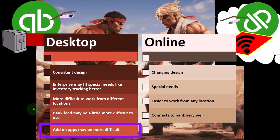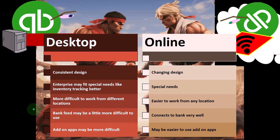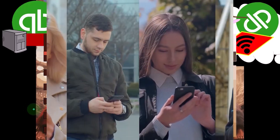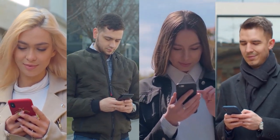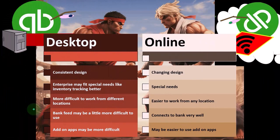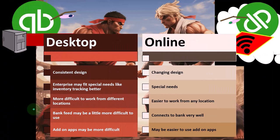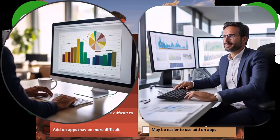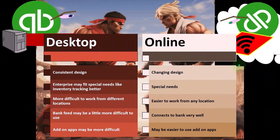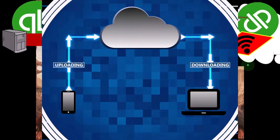Add-on apps may be more difficult to use for the desktop versus the online for the same reason. With the desktop version, you might have access to add-on apps that give you more special features within QuickBooks, but because it's a desktop software, it might not be as easy to integrate certain types of apps. Whereas with the online version, it's easier to set up and be adaptable to other add-on type apps. You want to be careful with what types of add-on apps you're using, as the online version can lead people to do things they might want to think about more before using other types of apps.